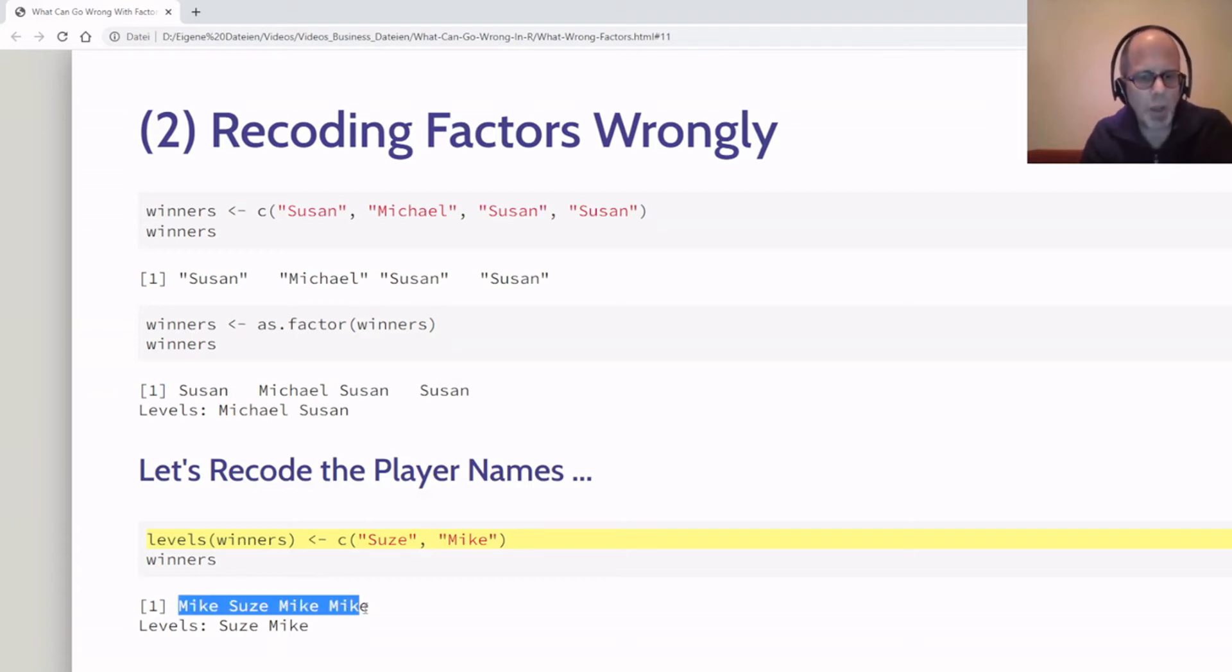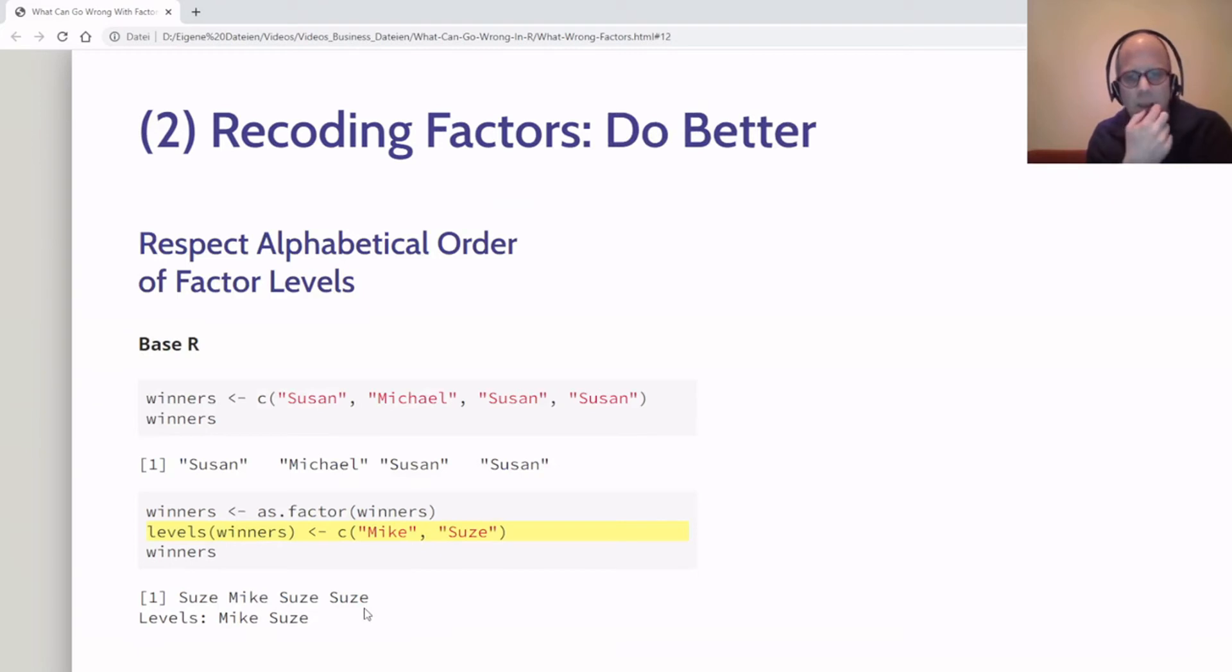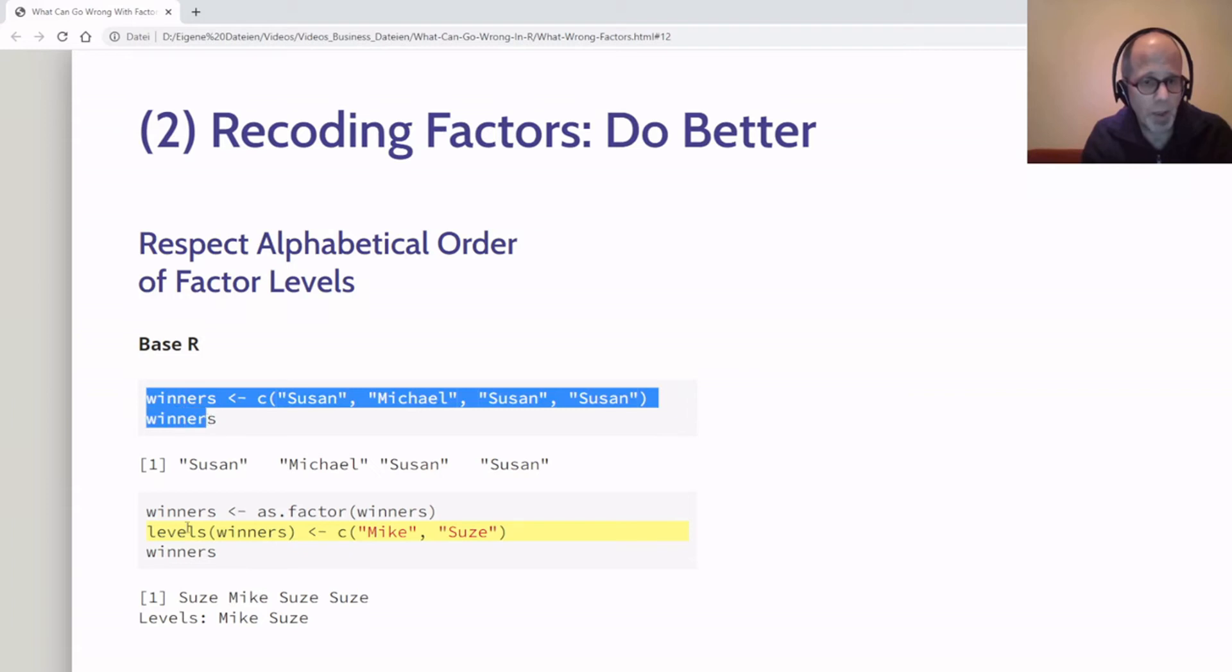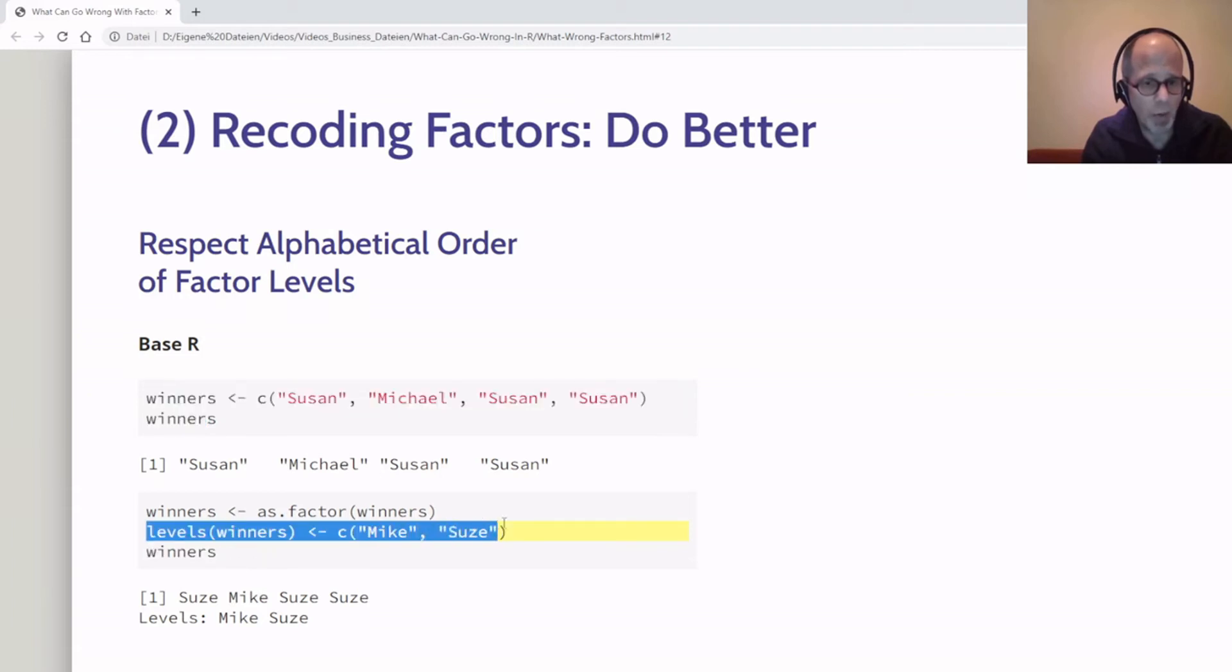Let's see how we can do better. I already gave a hint. The first simple solution would be to respect the alphabetical order of factor levels. We're creating the same vector again, and the only change is that when I reassign the levels, I make sure Mike comes first because it's first in the alphabet, and Zeus is second. Now it works and the results should be correct—Zeus won three of the four games and Mike only won the second game, as should be the case. This is a pure base R solution.